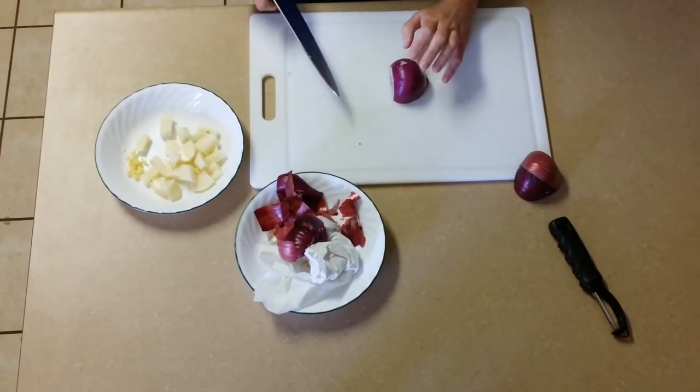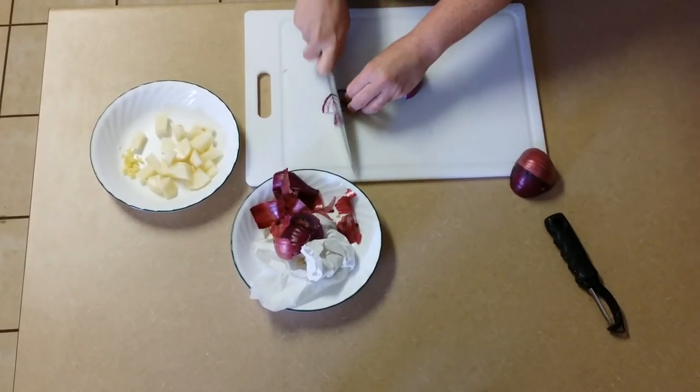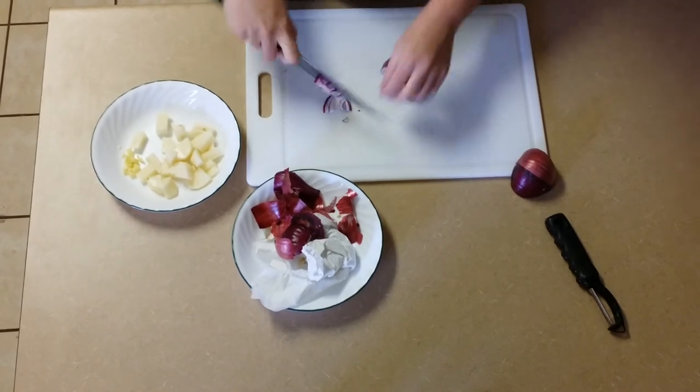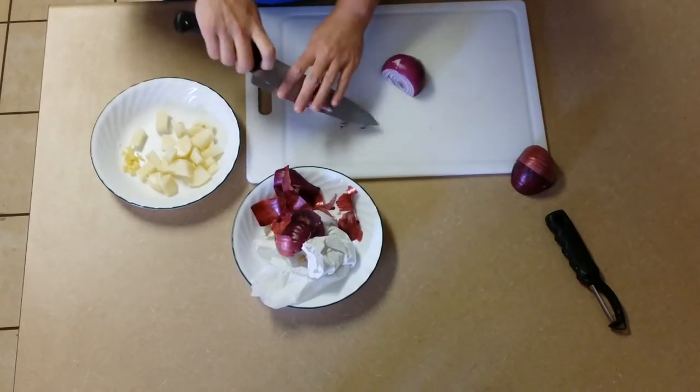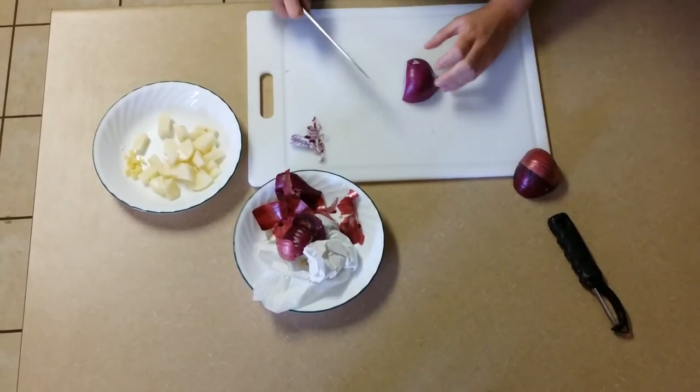So I want a small dice of this onion. Some people slice it and then they cut it. And that works. But it takes a lot of time. You want to dice an onion quickly and more efficiently. This is what you are going to do.